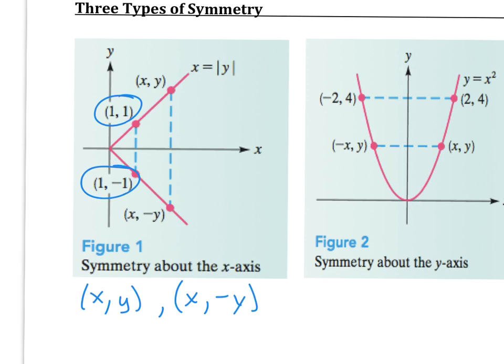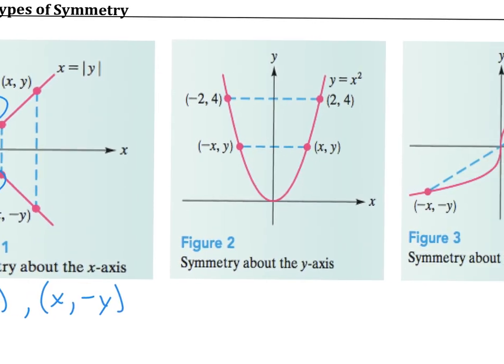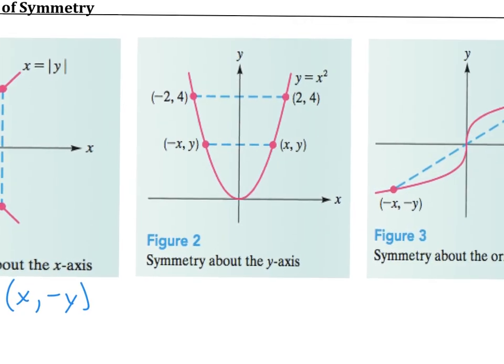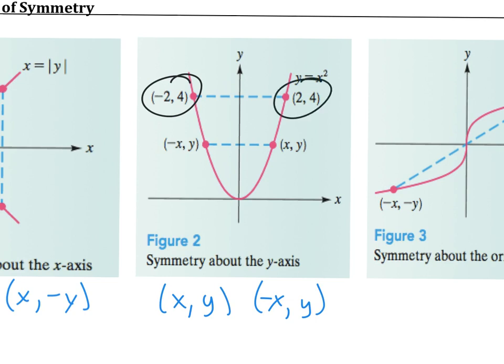The second type is symmetry about the y-axis. For every point (x, y), we have the same y value but the x value is the exact opposite. You can see an example with the points (-2, 4) and (2, 4). This is the key idea we're going to use to test for y-axis symmetry — we use the opposite x value, and notice that it's symmetric about the y-axis.